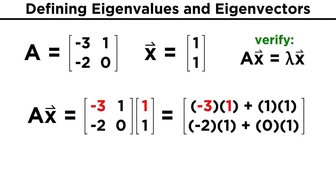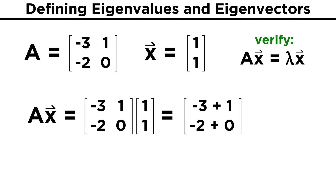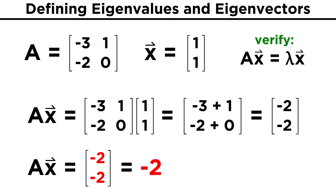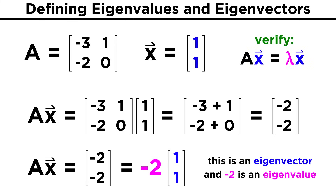Performing the multiplication, we get negative three times one plus one times one, negative two times one plus zero times one, or negative three plus one, negative two plus zero, which simplifies to negative two, negative two. We can simply factor out a negative two from this and get negative two times [1, 1], which is just our original vector multiplied by negative two. We have not only verified that [1, 1] is in fact an eigenvector of our matrix, but also discovered that negative two is one of its eigenvalues.